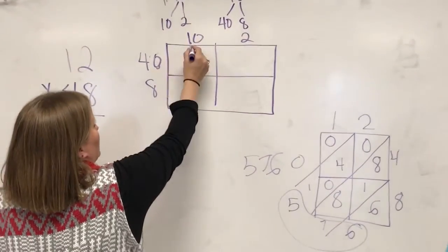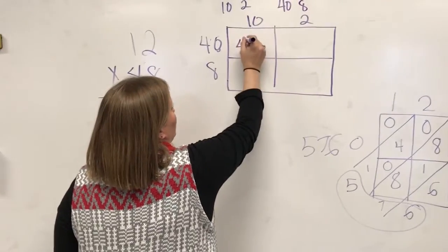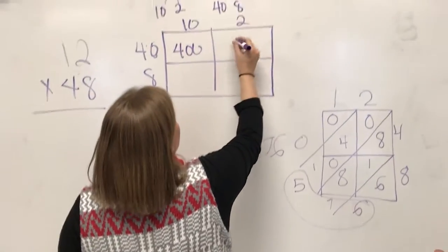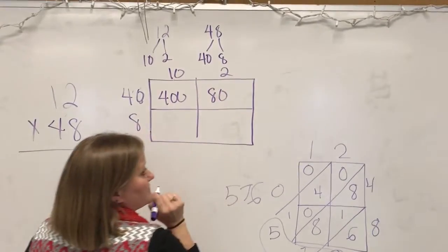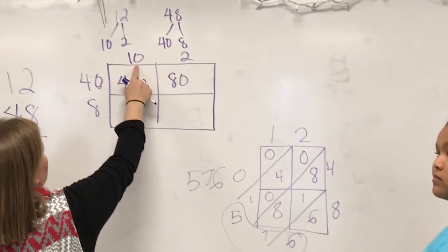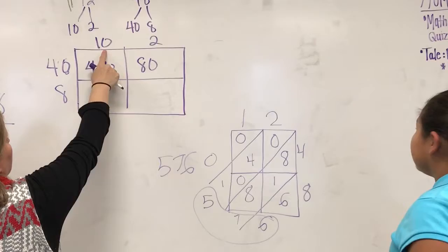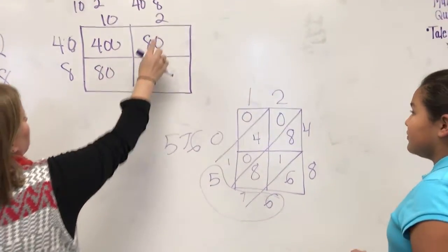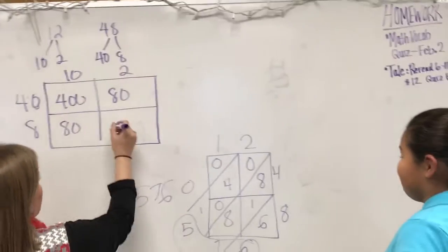Okay, 40 times 10 is 400, 40 times 2 is 80, 10 times 8 is 80, and 2 times 8 is 16.